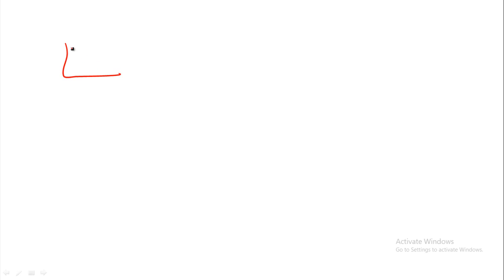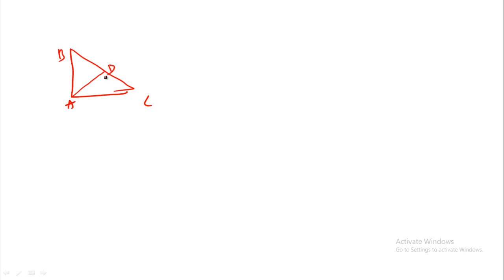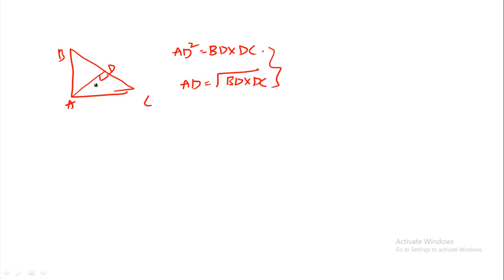In triangle ABC with a right angle at D — where AD is the altitude to the hypotenuse BC — AD squared equals BD times DC. The length AD equals the square root of BD times DC. This is a very very important formula.